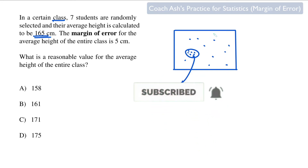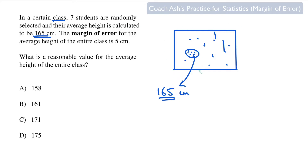Maybe there are a few students who are very tall and some of them are super short. So the value that's going to be the average — the real average — is probably going to be different than this 165 number. And that's where the concept of the margin of error comes in.